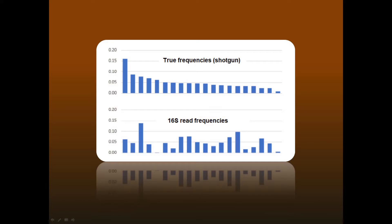Here is an example from real data. The top histogram shows the true frequency distribution of species measured using shotgun sequencing. The bottom histogram is the frequency distribution measured by 16S reads. The distributions look very different, and the correlation between the true and measured frequencies is very weak.